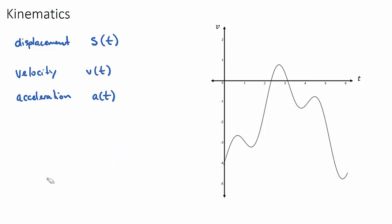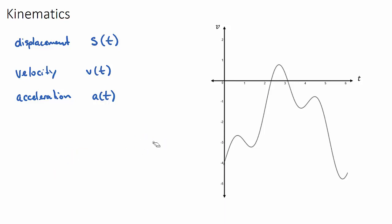Displacement is especially important when objects change direction. If you start at a line and travel 50 meters one way, then run back to where you started, your total distance would be 100 meters, but your displacement would be zero — because you finished where you started. Displacement is how far away you are from your original position.